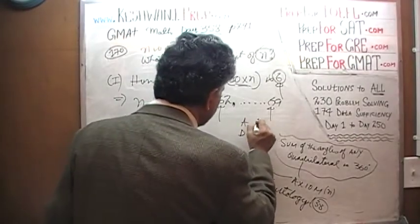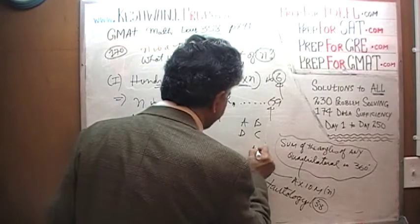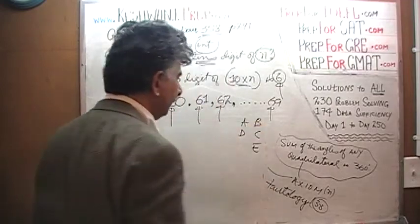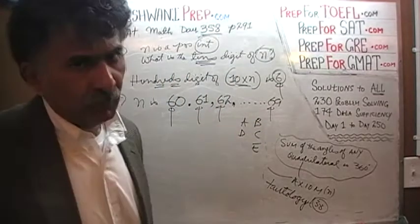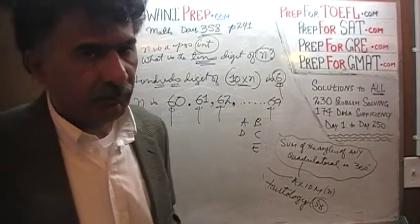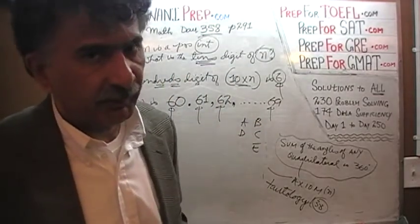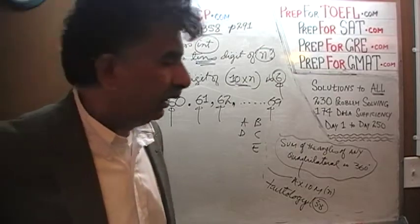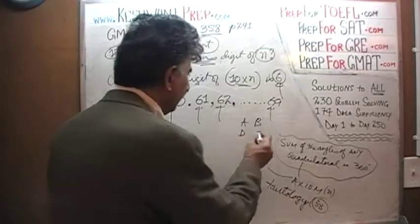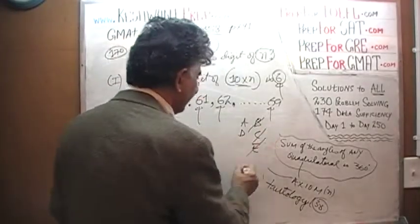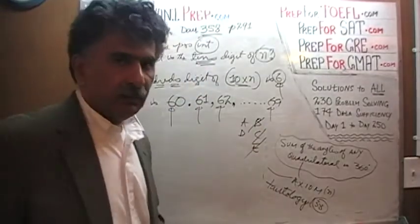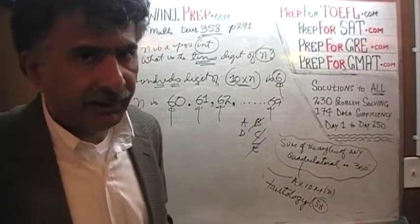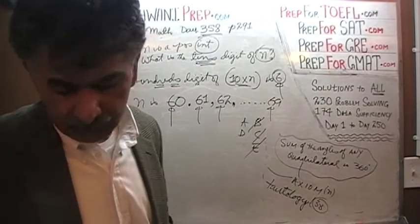Now that we have established that the first statement by itself is enough, the answer cannot be B, C, or E — it would have to be either A or D. Let's look at the second statement.